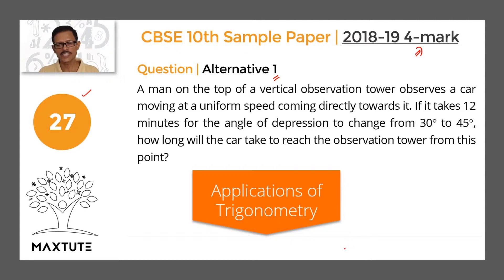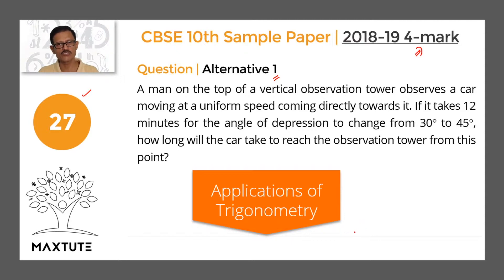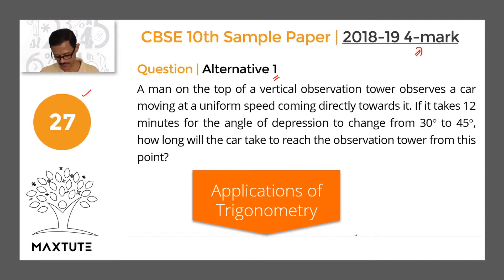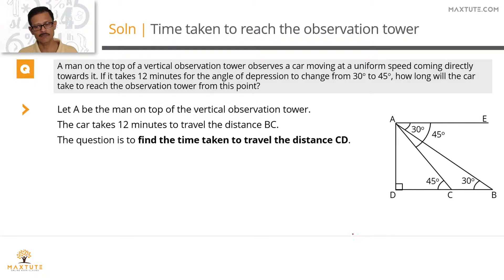A man on top of a vertical observation tower observes a car moving at a uniform speed coming directly towards it. If it takes 12 minutes for the angle of depression to change from 30 degrees to 45 degrees, how long will the car take to reach the observation tower from this point? Let's illustrate this entire information in terms of right angle triangles.